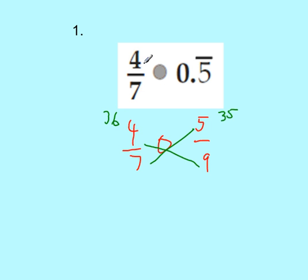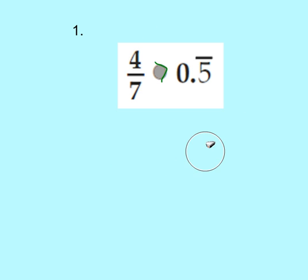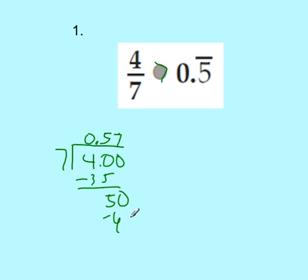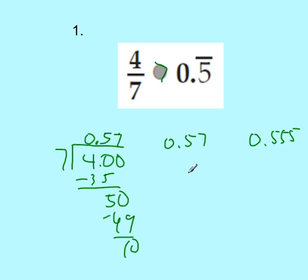So we can see that four-sevenths is less than 0.5̄. If you don't like that method, you can convert four-sevenths into a decimal by doing 7 into 4: 7 goes into 40 five times, subtract 35, get 5, bring down 0 — 7 goes into 50 seven times, subtract 49, get 10. So 0.571... is greater than 0.555..., and you can compare them that way.